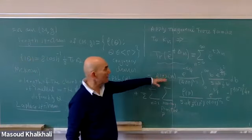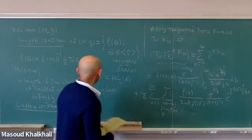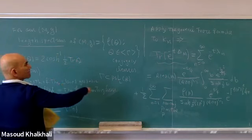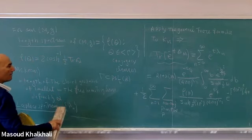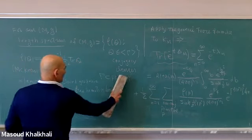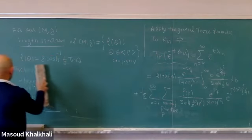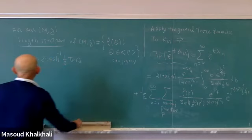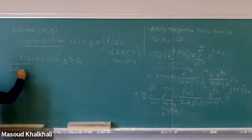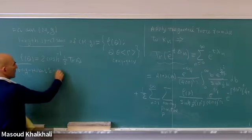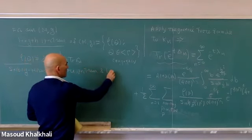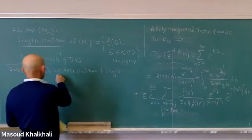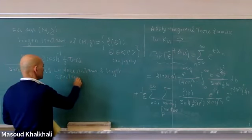The trace formula shows that the length spectrum and the Laplace spectrum determine each other. The result of Huber and Selberg is that the length spectrum and the Laplace spectrum mutually determine each other.